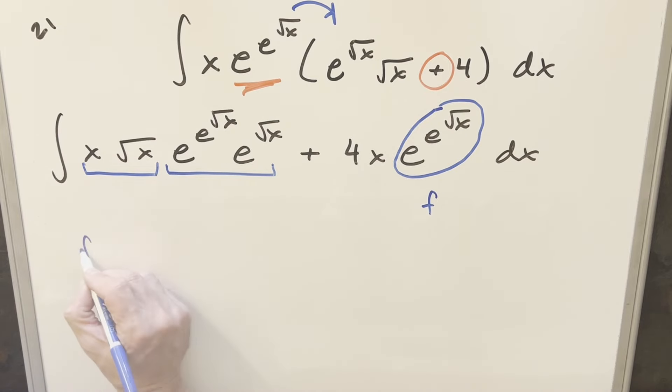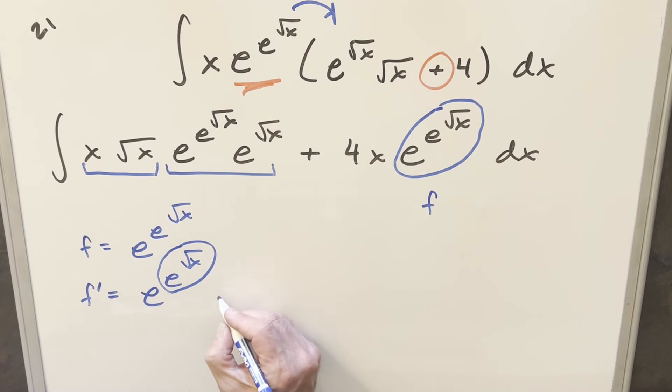We're saying f is going to be e^(e^√x). I want to take a derivative on this. So first with the base e, we just get the whole thing back. Then with chain rule, you take the derivative of this—that's just going to again be e^√x. And then chain rule again, derivative of square root of x is just going to be 1 over 2√x.